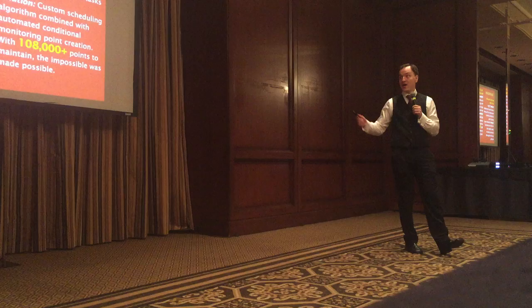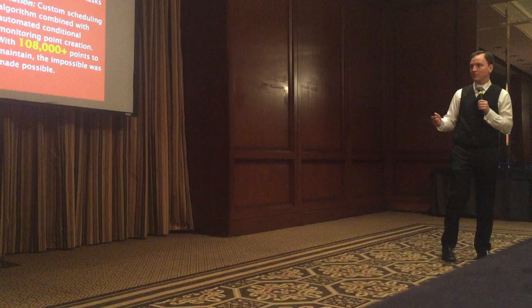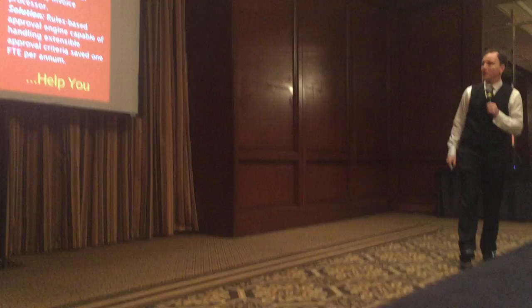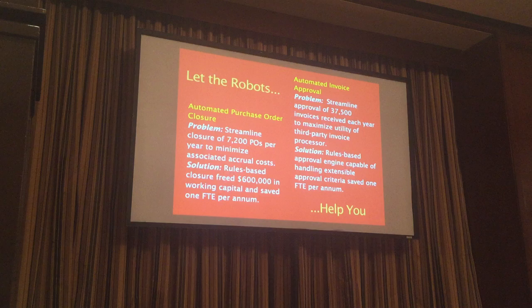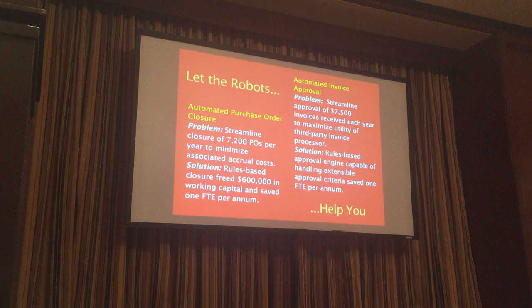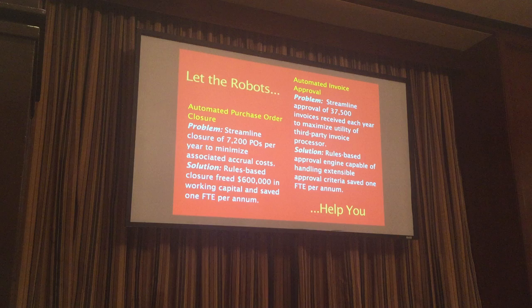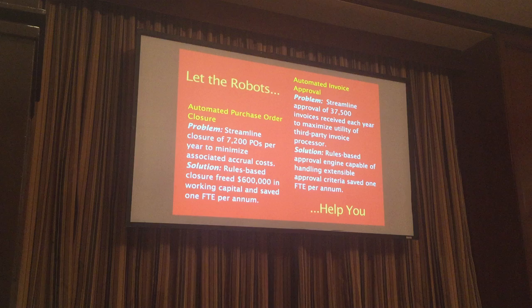That one you can actually do with automation scripts. Part of this seminar is trying to draw the line of what you can and can't do with customization versus without. We built one customization that automatically closed 7,000 purchase orders per year, saving one FTE and reducing capital tied up in open purchase orders by $300,000. Another customization built a rules-based engine that looked at invoices coming across the MIF from a third-party vendor, checked where they're coming from and the amounts, and could automatically approve them based on set criteria. That enhancement handles about 37,000 invoices per year.